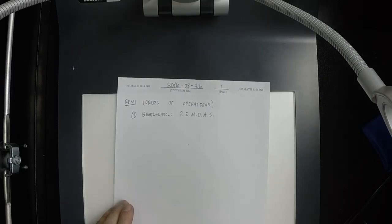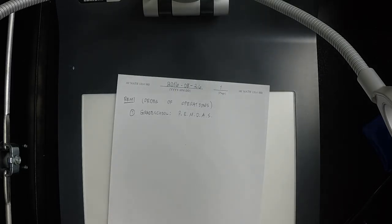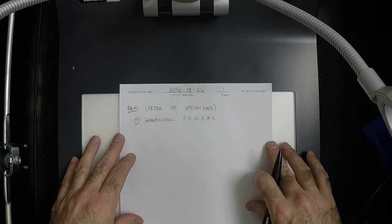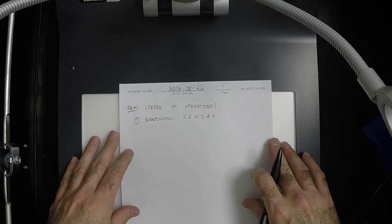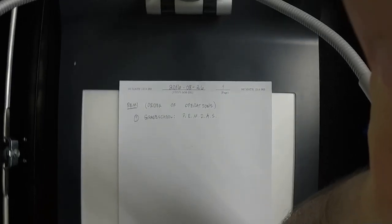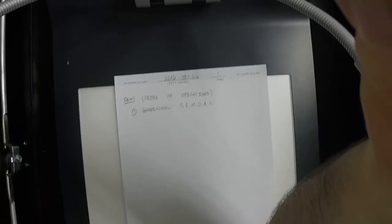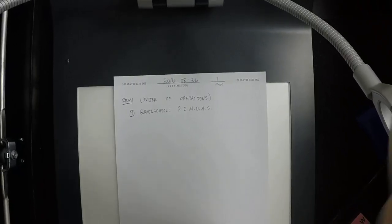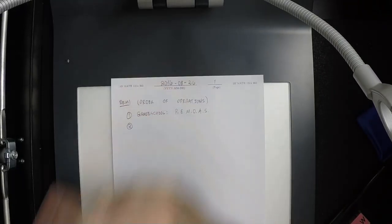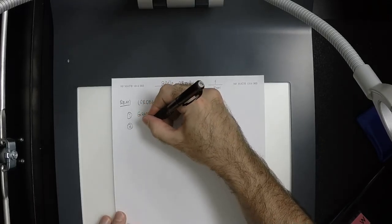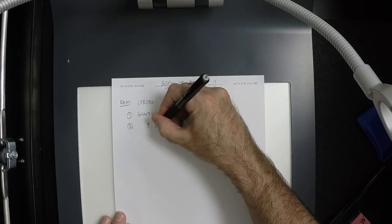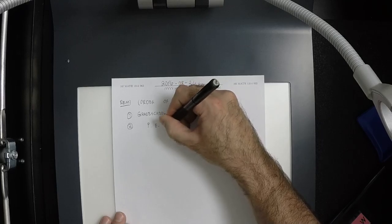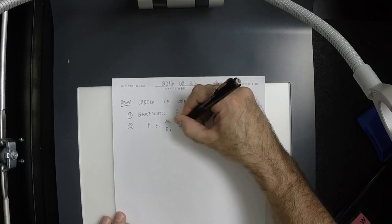That stands for Parentheses, Exponents, Multiplication, Division, Addition, Subtraction. Now I've got good news and bad news - it's actually slightly different than you might remember from grade school. So the order is actually P-E, and then both M-D occur at the same time, and both A-S occur at the same time.